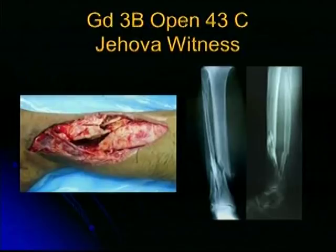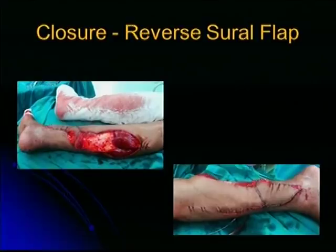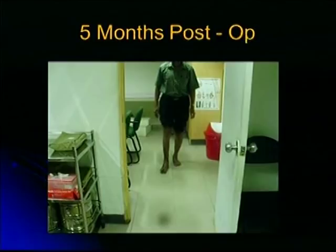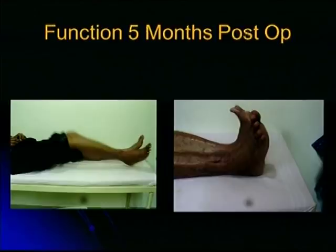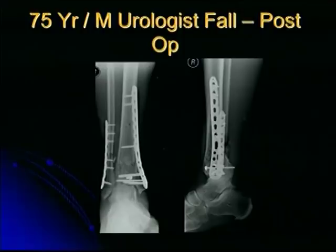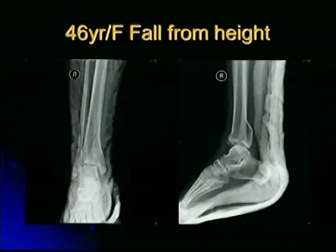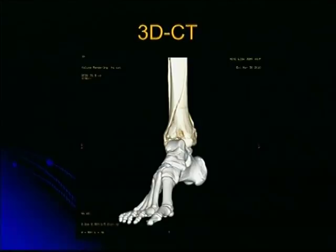These are examples where we did a reverse sural flap and fixation at the same time, with good function at five months. And this is what happened to the urologist shown earlier — we fixed it with two plates, one on the medial side and one on the lateral side, both locking compression plates, and obtained a fairly good intra-articular reduction. Another case shows the CT scan and post-operative result.